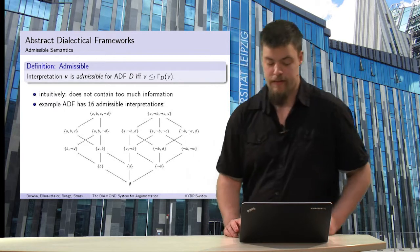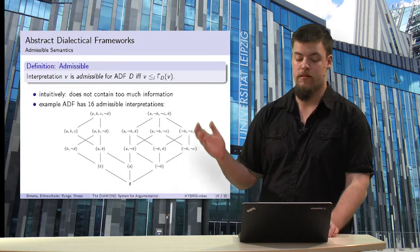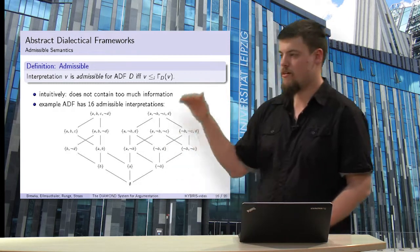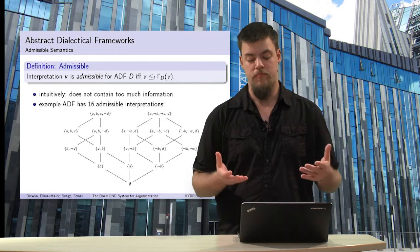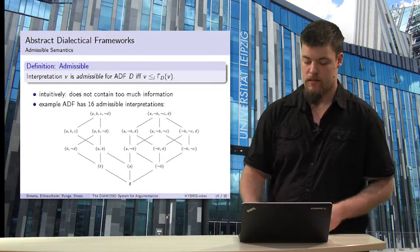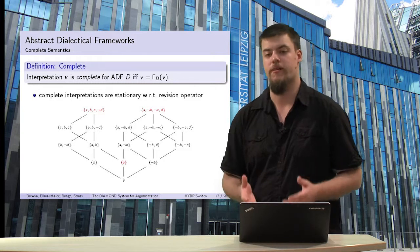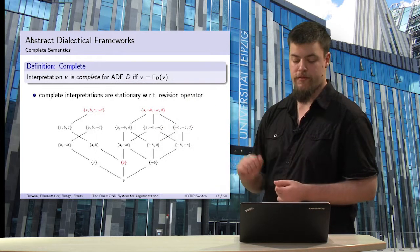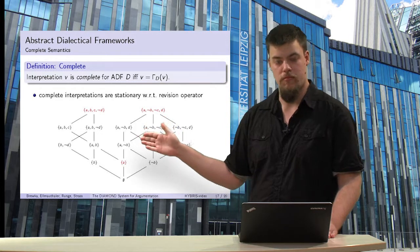For our example ADF, we have 16 admissible interpretations, ordered by the degree of information. At the bottom we have the empty set, and at the top we have the two-valued models where each variable is mapped to true or false with no undecided values. The complete interpretation is the case where the interpretation is exactly a fixed point of the characteristic operator. We see three different complete interpretations: the grounded model with A alone, and the two two-valued models.